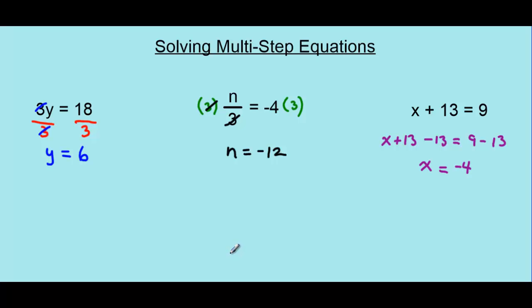Those three examples showed us ways in which we can add, subtract, multiply, or divide in order to isolate for our unknown variable. When isolating for an unknown variable, we use opposite operations. Let's take a look at some examples now that use multiple steps in order to isolate or solve for our unknown variable.